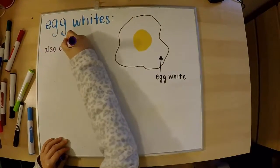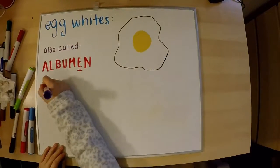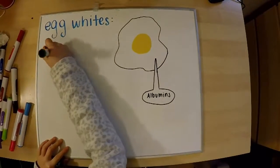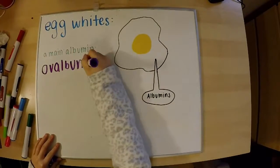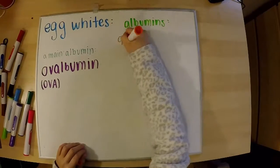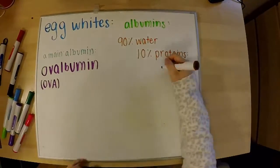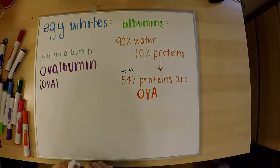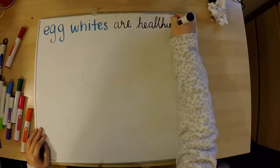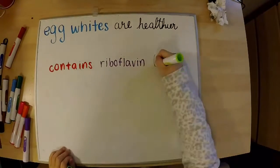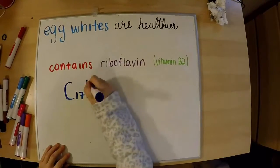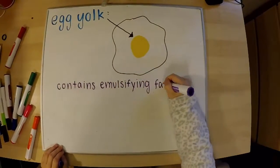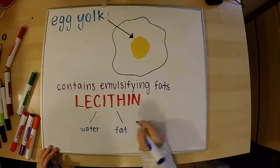Egg whites are the ooey gooey part of the egg, also called albumin with an E, and they contain albumins with an I — so don't get those confused. A main albumin found in egg whites is called ovalbumin, shortened to ova. Albumins comprise 90% water and 10% proteins, and about 54% of those proteins are ovas. Egg whites are healthier because they contain riboflavin, also known as vitamin B2. Egg yolks, on the other hand, contain an emulsifying fat called lecithin, which is great because it can bind to both water and fat.